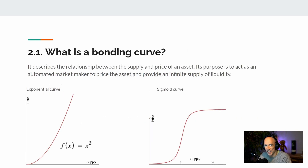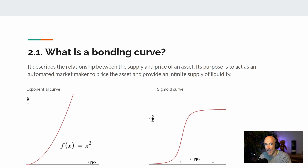So what is a bonding curve? A bonding curve describes the relationship between the price and supply of an asset. It acts as an automated market maker to price the tokens and to provide us with an infinite amount of supply.